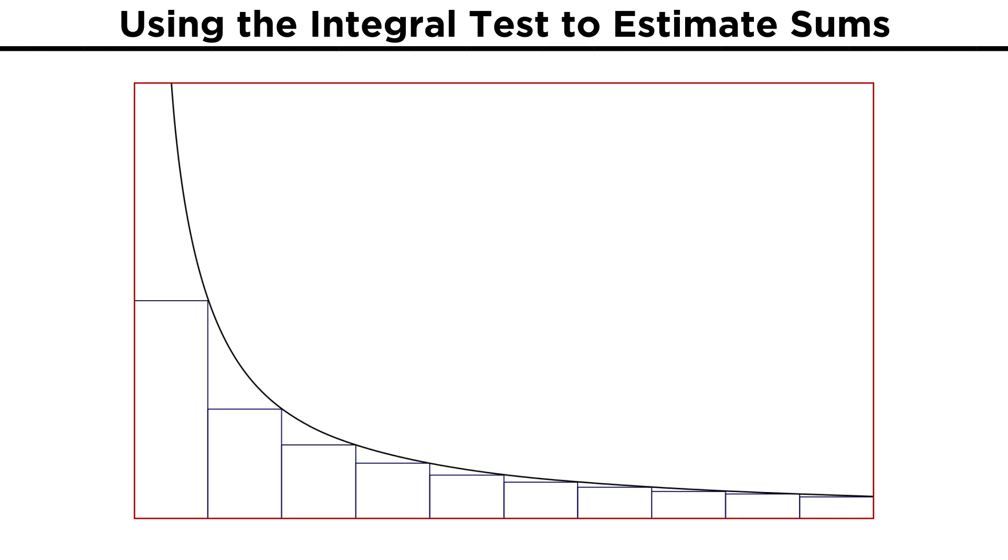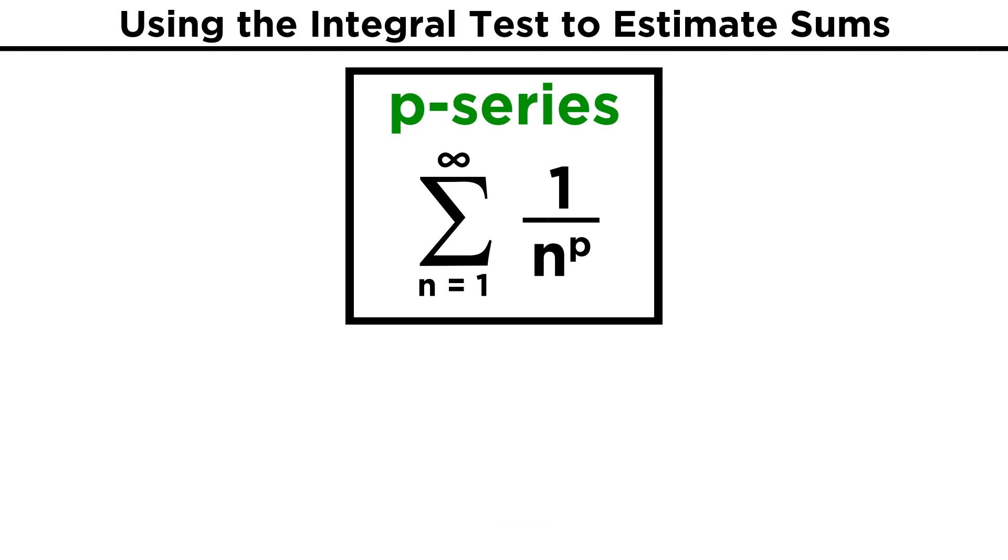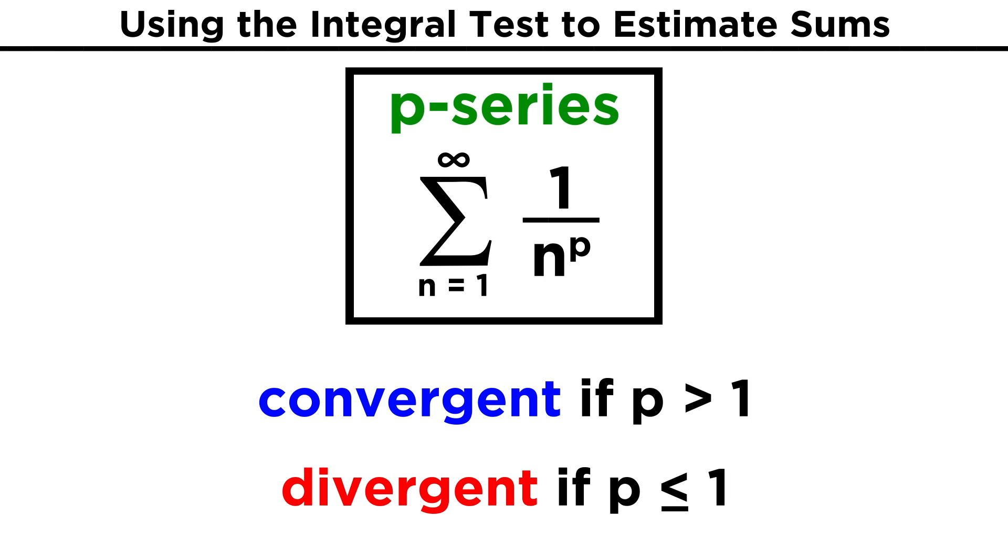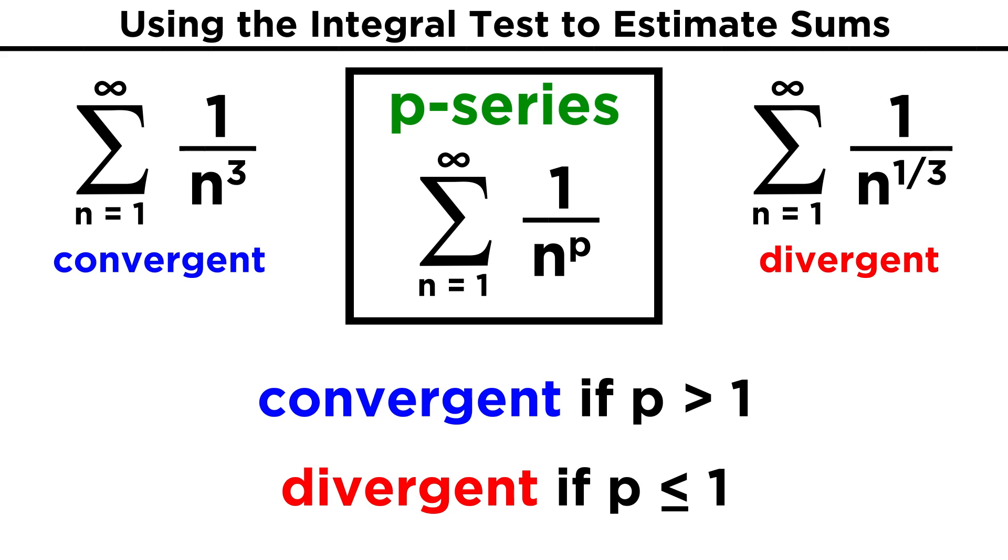Let's just mention a few important truths that can be found by applying the integral test. Any series in the form of one over n raised to some exponent is called a p-series. This includes our first example, one over n squared. As it happens, any p-series will be convergent if p is greater than one, and it will be divergent if p is less than or equal to one. So if we have one over n cubed, it will converge. If we have one over the cube root of n, or one over n to the one third, it will diverge.